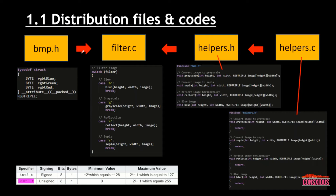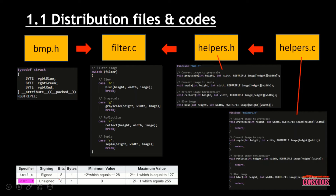First, the BMP.h — the most important part here is the type definition structs. The bytes are assigned to the blue, green, and red, and the parent will be the RGB triple. We assign bytes because bytes has a size of 255, so we know that the colors have the range of 0 to 255. That's why we assign bytes, which is the unsigned type.